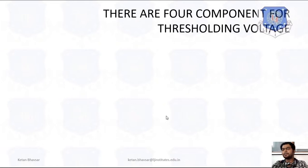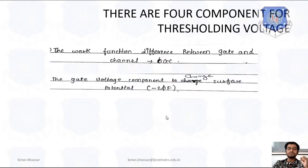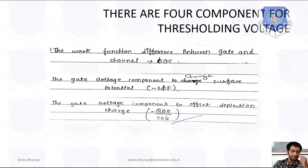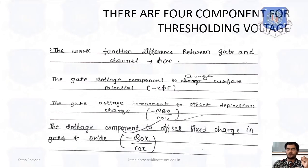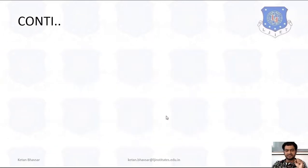There are four main components when we talk about thresholding and threshold voltages. First, the work function difference between gate and channel is φGC. Second, the gate voltage component to change surface potential is −2φF. Third, the gate voltage component to offset depletion charge is −Qb/Cox. Fourth, to offset fixed oxide charge at the gate is −Qox/Cox. These are the main four components affecting threshold voltage at the transistor level.